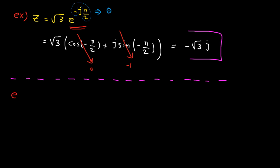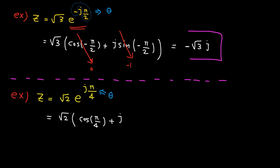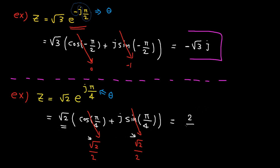Let's solve one more example. This complex number is given in the polar form and we want to convert it to Cartesian. The angle here is pi divided by 4. Again, using Euler's formula, we get this. From trigonometry, we know the cosine and sine of pi divided by 4 are equal to square root of 2 divided by 2. We have another square root of 2 here, so by doing some simplification, we get 1 plus j.